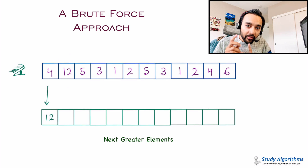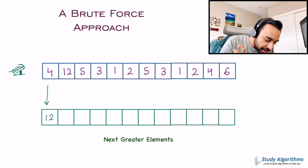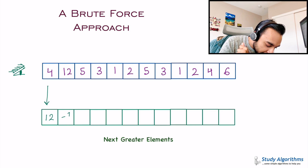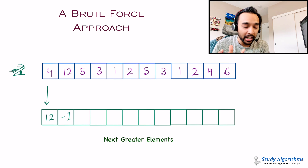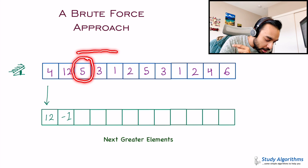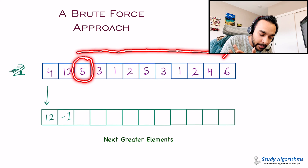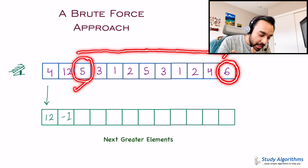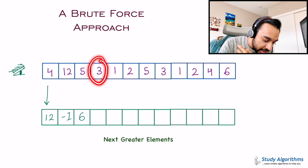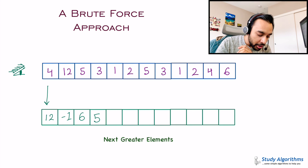Going ahead, I have element 12. When looking for the next greater element, you don't start from the very beginning — you start from 12 and look all the way to the right. You do not find any element greater than 12, so for element 12, the next greater element will be minus 1. Moving on to element 5: start looking to the right — 3 is smaller, 1 is smaller, 2 is smaller, 5 is equal, 3, 1, 2, 4 are smaller — then ultimately you get 6. Since 6 is greater than 5, the next greater element for 5 is 6. Similarly, for element 3, the next greater element will be 5.